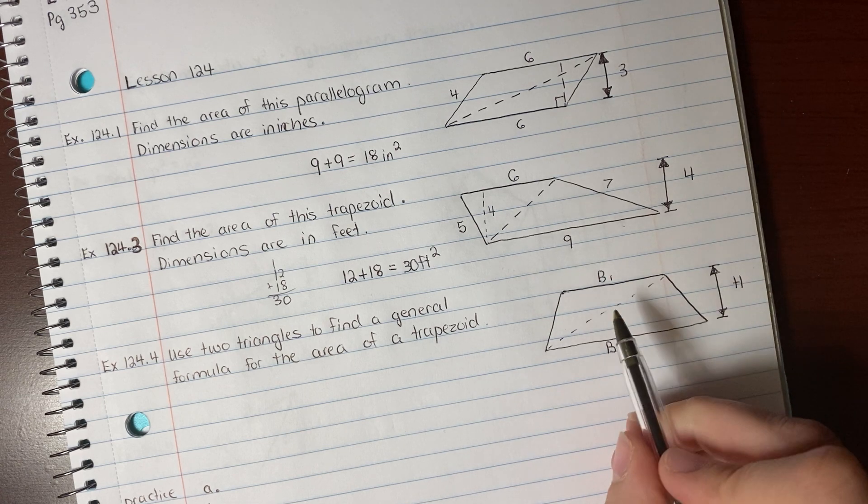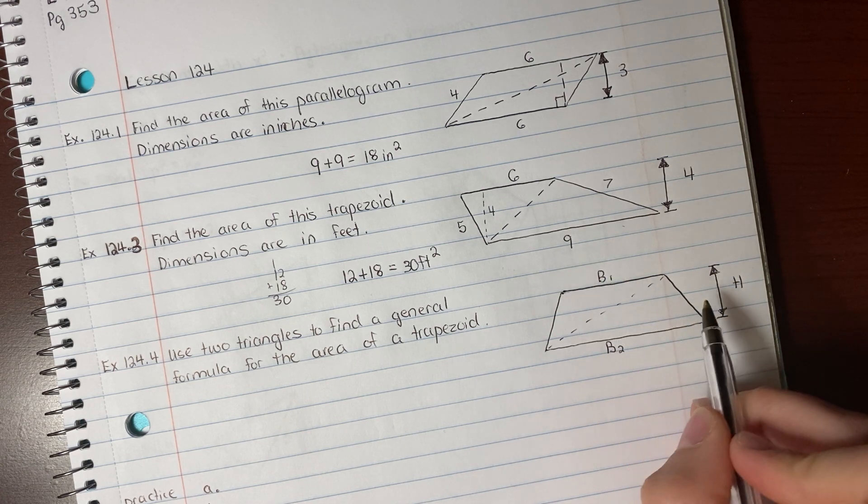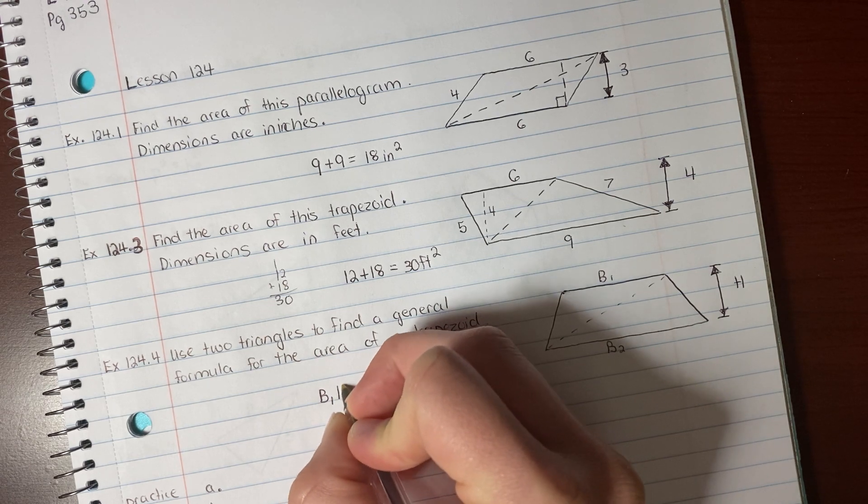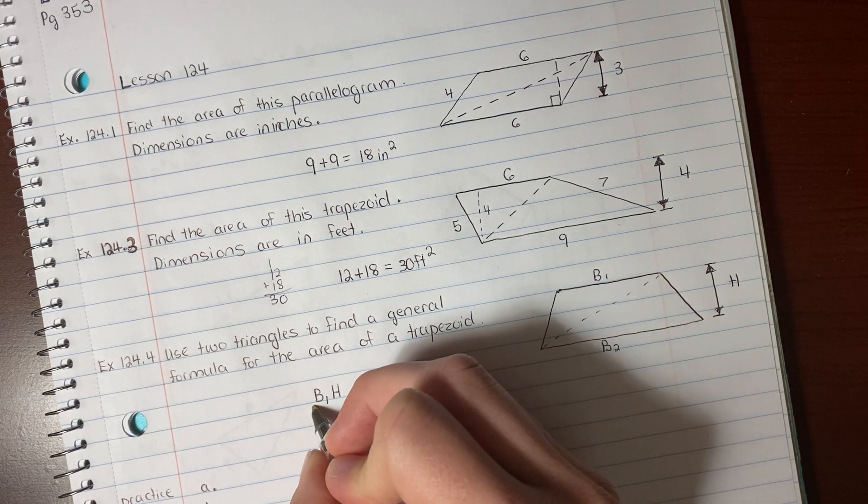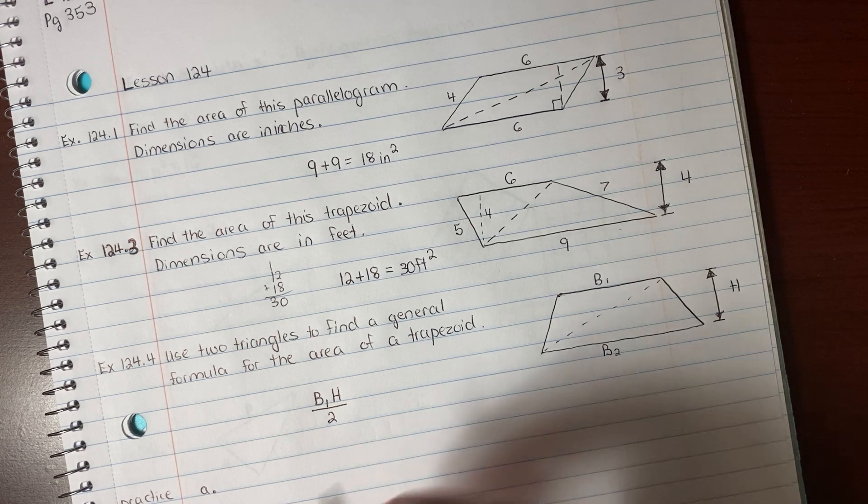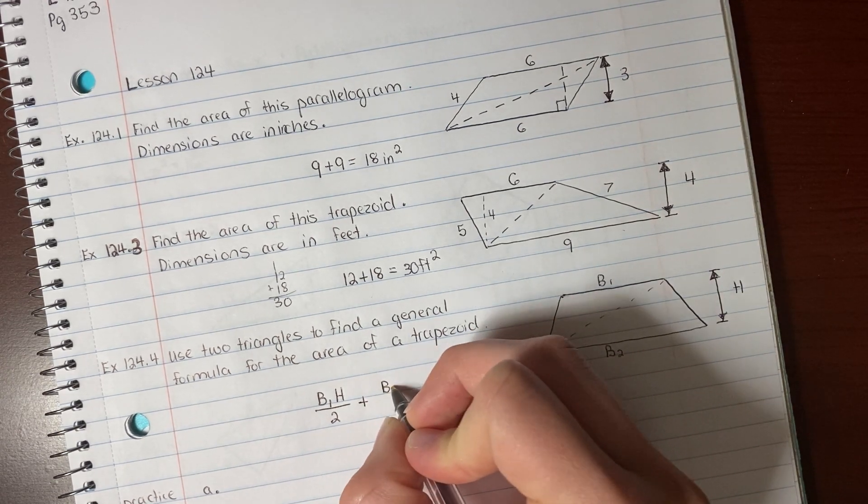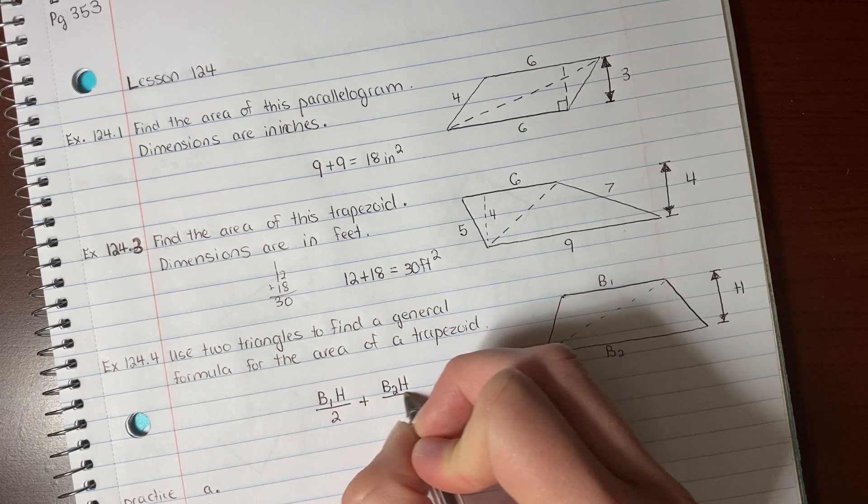And then, if we had the numbers, what we would do is we would do this base times the height. So I'm going to write base 1 times height. And we would divide that by 2. Then we would do this base times the height. And we would be adding these. And we would divide that by 2.